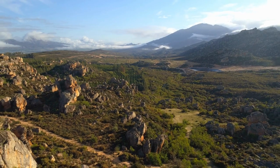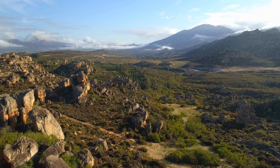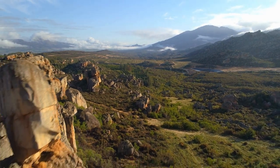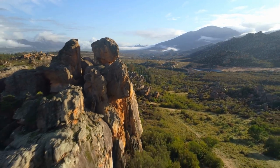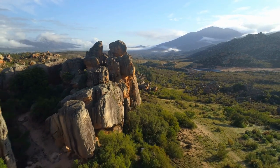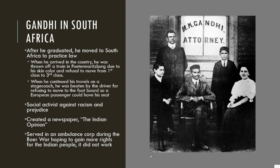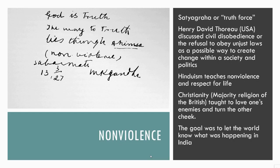Gandhi served as an ambulance corps man during the Boer War, actually helping to set up the ambulance corps, assuming that would help Indians gain more rights within South Africa — but it didn't work. He tried numerous different strategies, but in the end, the apartheid system was solidly in place until the 1990s. When Gandhi eventually moved back to India, he assisted in their independence movement, and his big focus was going to be non-violence.